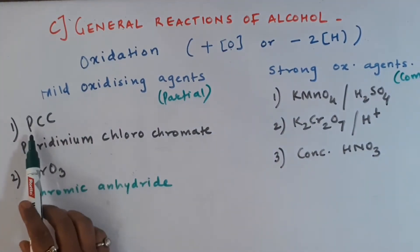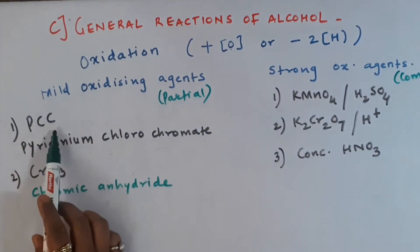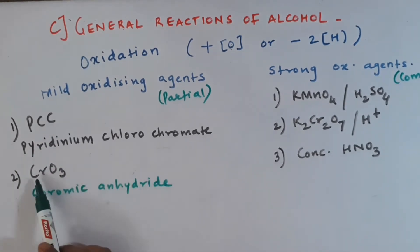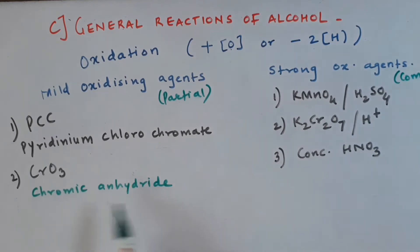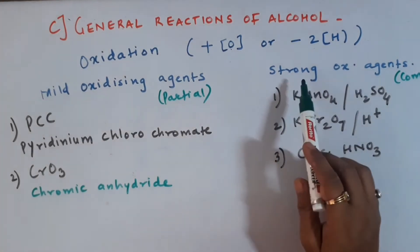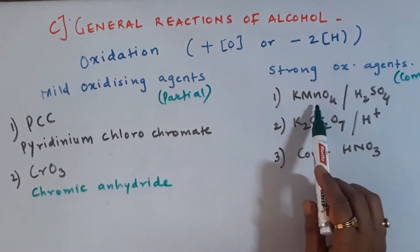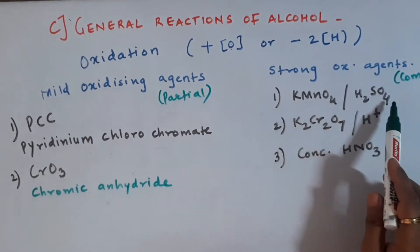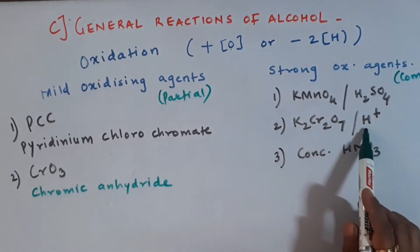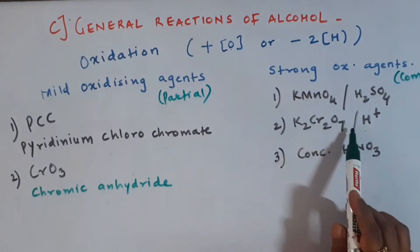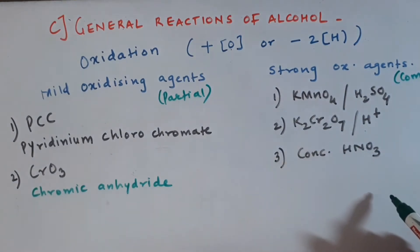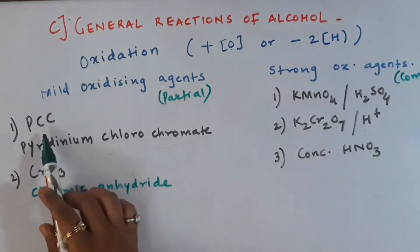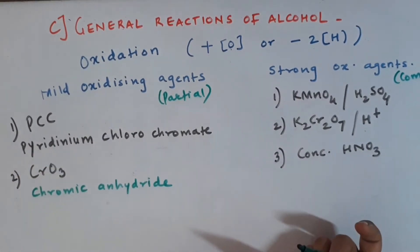The first reagent, which is very light and mild, is PCC, called pyridinium chlorochromate. The second mild reagent is chromic anhydride, CrO3. The strong oxidizing agents are potassium permanganate with concentrated H2SO4, called acidified potassium permanganate, and acidified potassium dichromate, or concentrated HNO3.